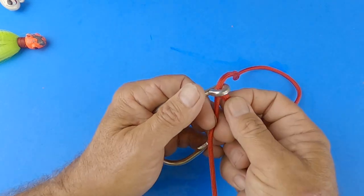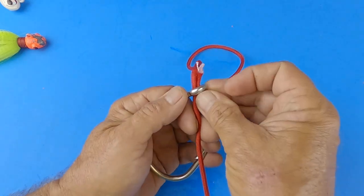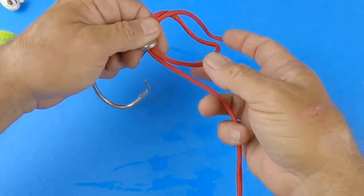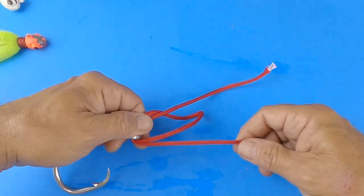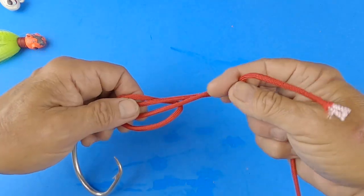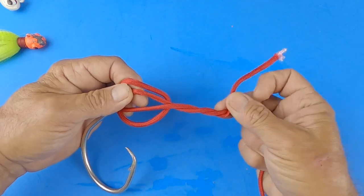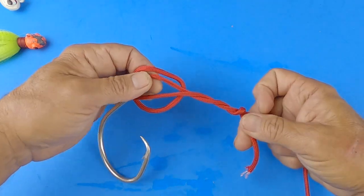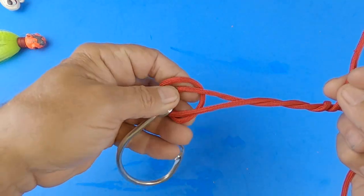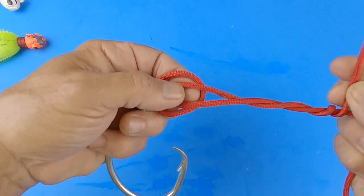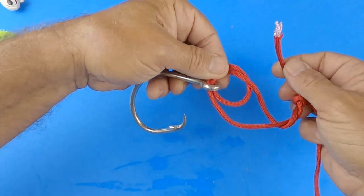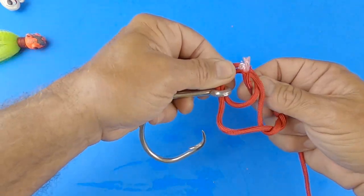Then we're going to double it. We're going to put it through again. We're going to put it through there twice and that gives us that loop. And then we're going to bring our main line up. We're going to take the tag end and we're going to wrap it around the main line several times, depending on the pound test line that you're using. If you're using heavier pound test, you might wrap it like four or five times. If you're using a lighter pound test, you might wrap it like seven or eight to 10 times. So I'm just going to wrap it about three times. And then I'm going to put it through both loops that I created there.